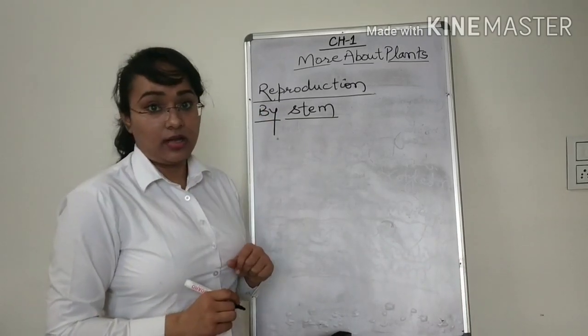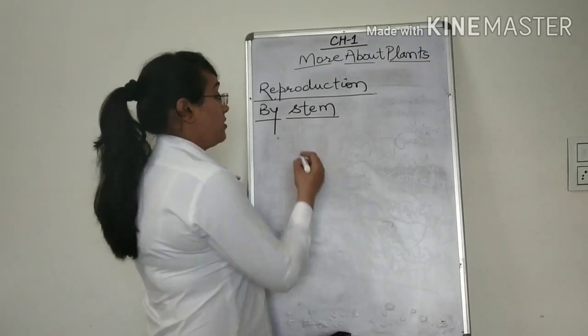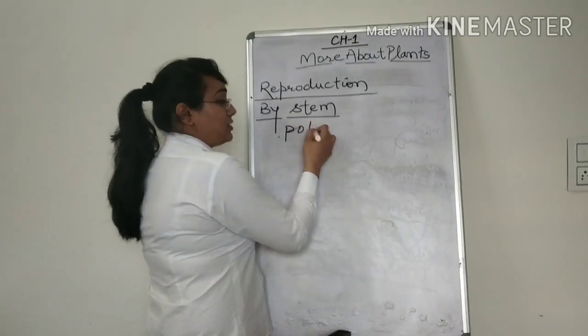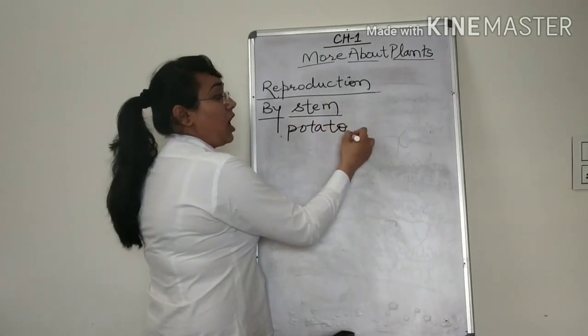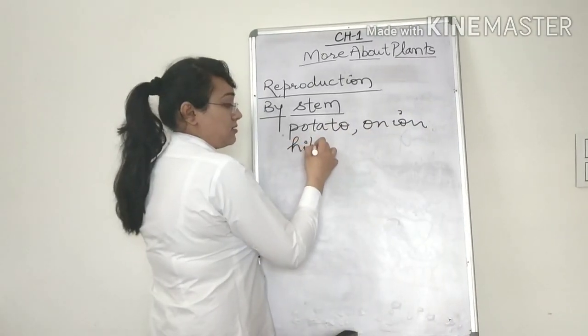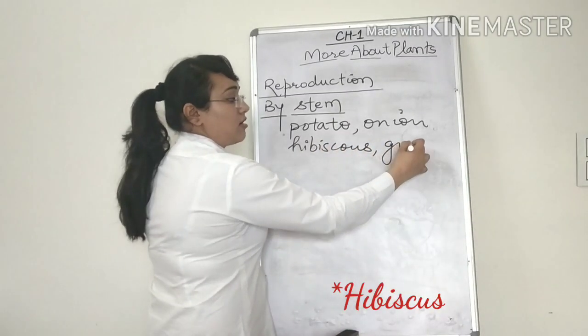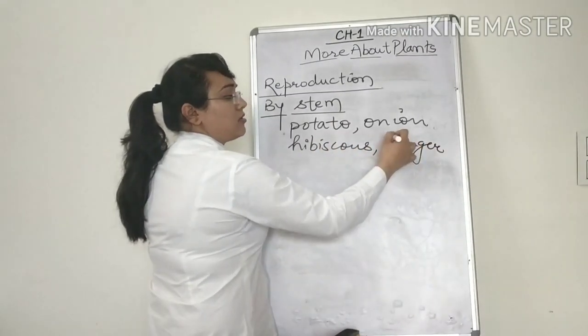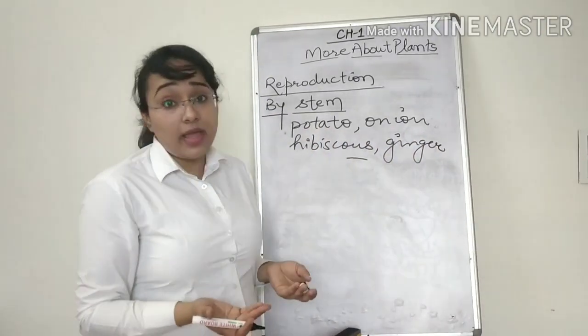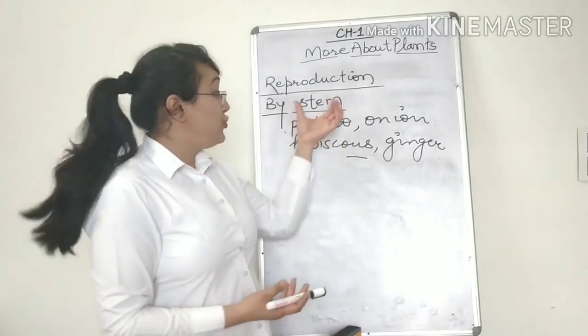Yes, you heard me right. There are many plants like potato, onion, hibiscus, ginger and many more. Now they don't have seeds in them, but we can still reproduce them. How? Using the stem.